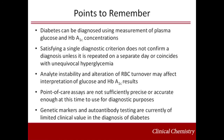There are several key points to remember about the diagnosis of diabetes. Diabetes can be diagnosed using measurement of plasma glucose and hemoglobin A1C concentrations. Satisfying a single diagnostic criterion does not confirm a diagnosis unless it is repeated on a separate day or coincides with unequivocal hyperglycemia. Interpretation of glucose and hemoglobin A1C results may be affected by analyte instability and alteration of erythrocyte turnover respectively. Currently, point-of-care assays are not sufficiently precise or accurate enough to be used for diagnostic purposes. Lastly, genetic markers and autoantibody testing are currently of limited clinical value in the diagnosis of diabetes.